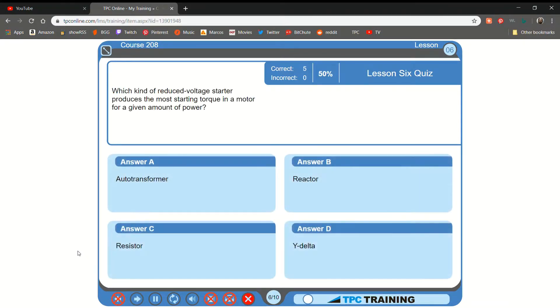Which kind of reduced voltage starter produces the most starting torque in a motor for a given amount of power? A. Auto transfer... That is not correct.